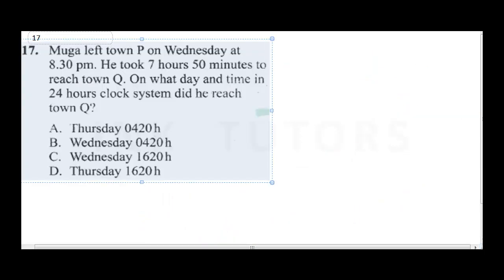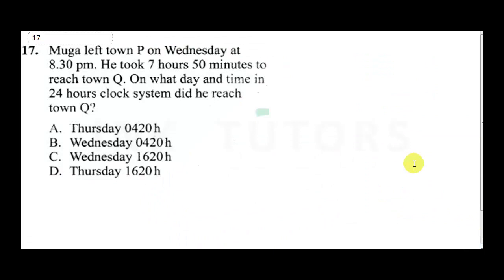Question 17 says: Muga left town P on Wednesday at 8:30 PM. It took 7 hours 15 minutes to reach town Q. On what day and time in the 24-hour clock system did he reach town Q? Remember, in the 24-hour clock system, when you count past 12 at night, 12 becomes 00:00, then you start counting again: 1, 2, 3, 4, and so on.